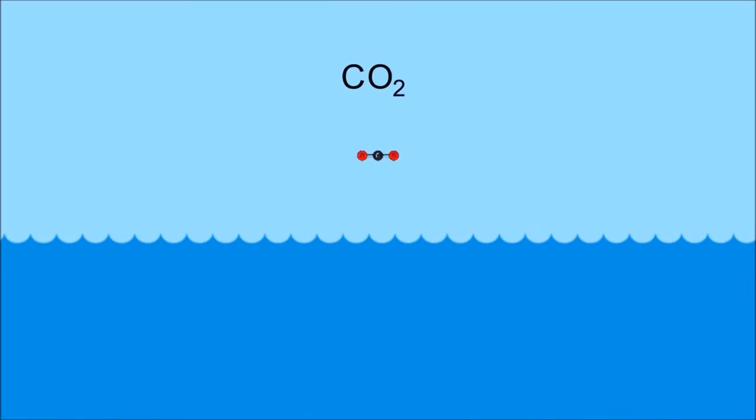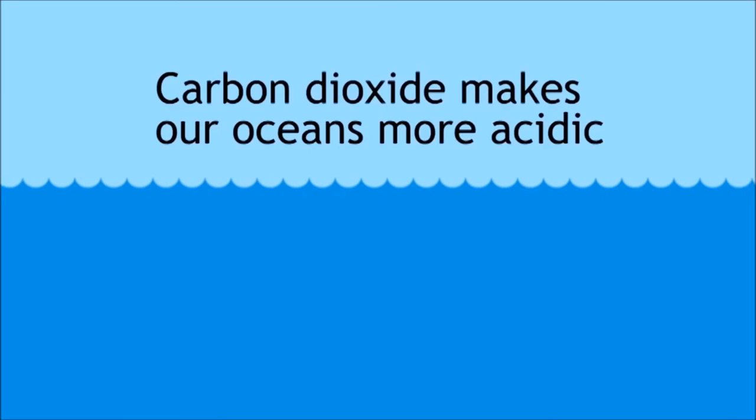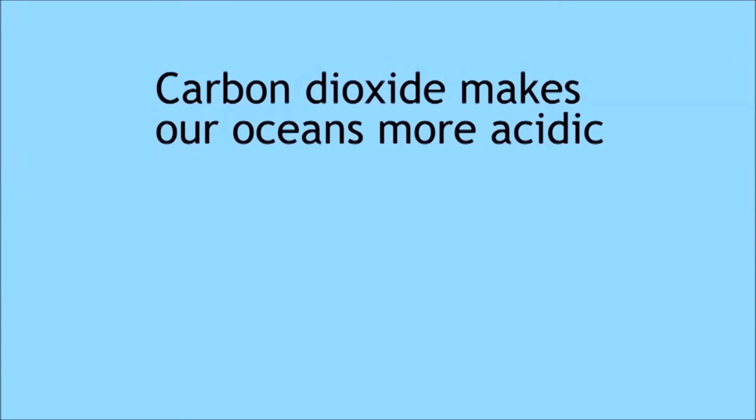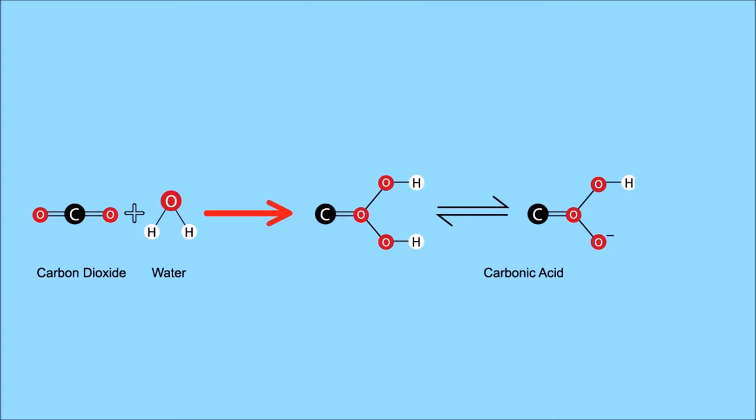Another problem comes from the extra carbon dioxide that dissolves in the sea. A good thing, you may think, because this removes some of it from the atmosphere. But the problem is that this makes the seas more acidic. Remember that carbon dioxide reacts with water to form a very weak acid, carbonic acid. It ionizes to form hydrogen and hydrogen carbonate ions.